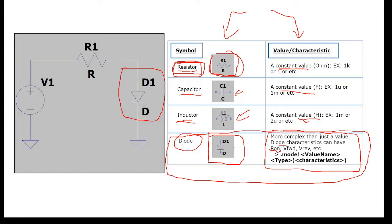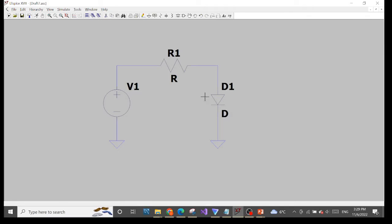For example, it could have the resistance when the diode is on, or the forward voltage drop on the diode, and the reverse voltage drop on the diode, and so on. There are many characteristics of a diode, more than just one value. In order to support this, LTSpice has the dot model command, which allows us to specify very complex characteristics for a diode.